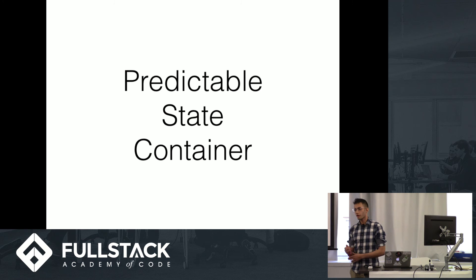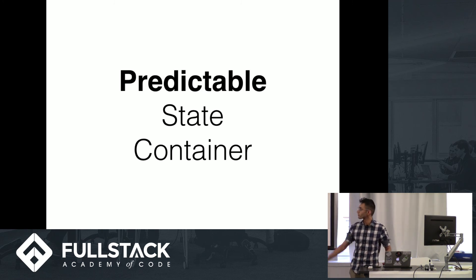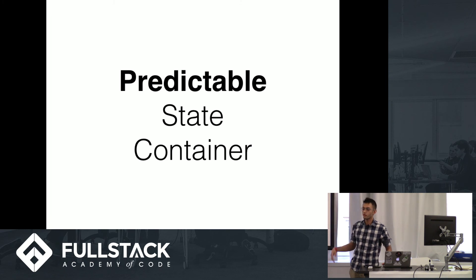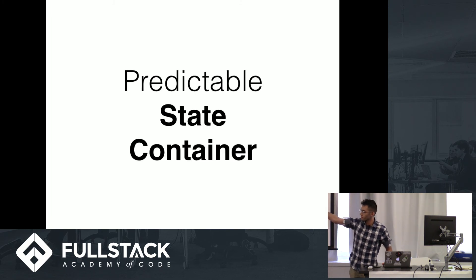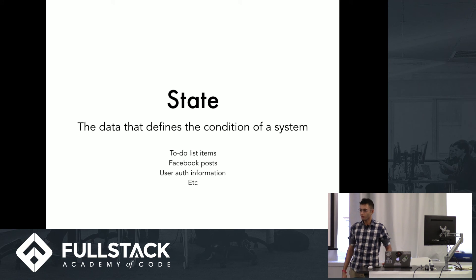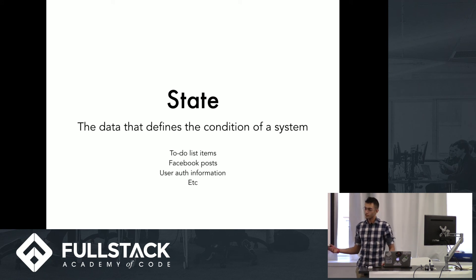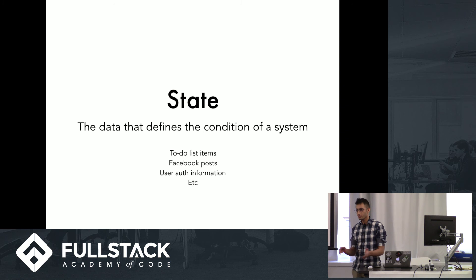I'm going to talk a bit about what this means. When we see this, we think about two different things: one is the predictability, which is an adjective modifying the noun of state container. So let's think about state and what that means. State is basically data that defines a condition of a system — in this case, your app.